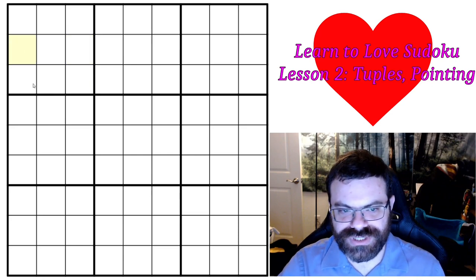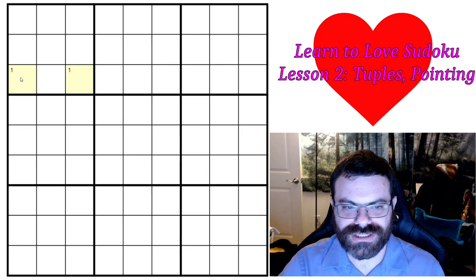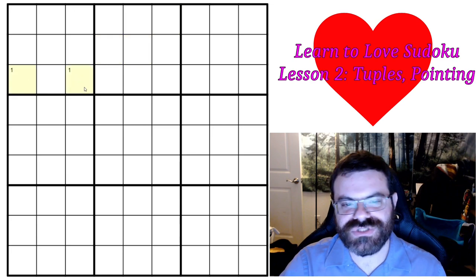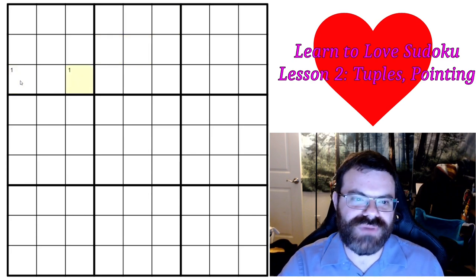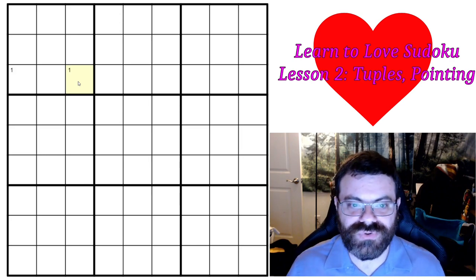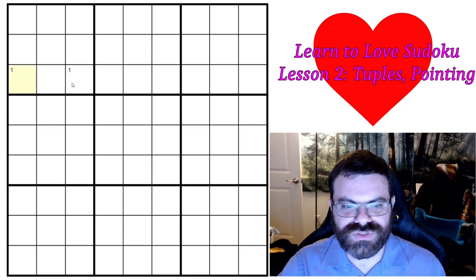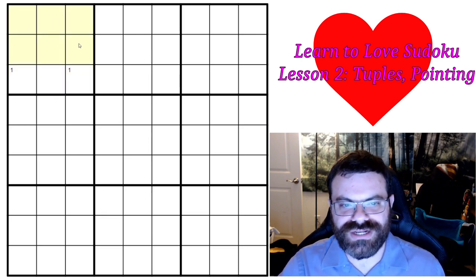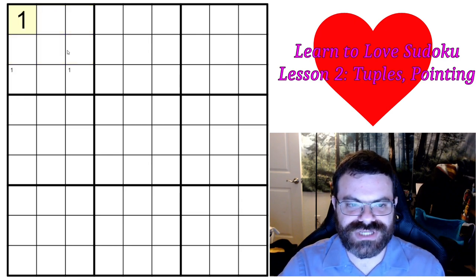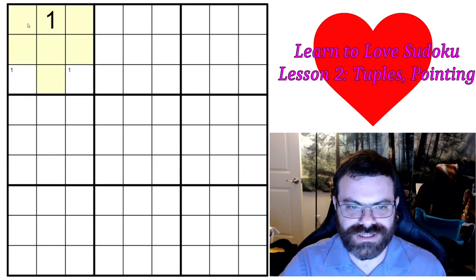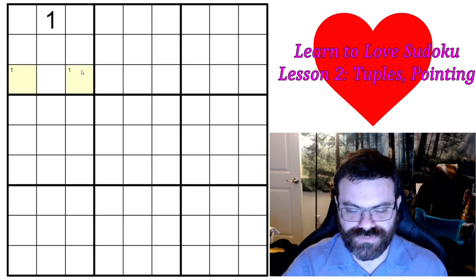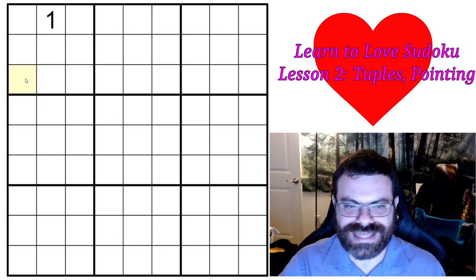So very similarly to pointing, there's also box line reduction. If I've reduced two cells to be a 1 through some other means - not because of the box, but through stuff looking into the box - that's called box line reduction. What that means is because ones can only be here in this row, and both of those places are in the same box, I can't put a one in the rest of the box. I can't put a one here or even here, because that would remove these two from being a one, and since that came from the row, now there's nowhere to put a one in the whole row.